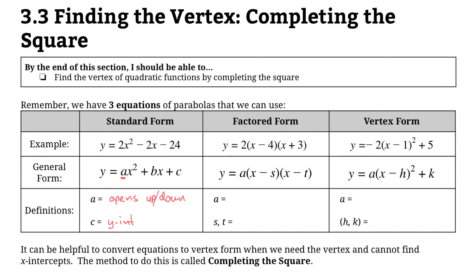Next we have factored form, which looks like this. It's always in the general form y equals a multiplied by (x minus s) times (x minus t). A once again tells us if our parabola is going to open up or down. And s and t — these numbers that are part of the factors — are actually our x-intercepts, otherwise known as our zeros or our solutions. To find those values we input 0 for y and solve for all possible cases of x.